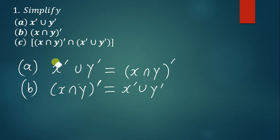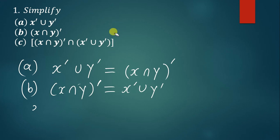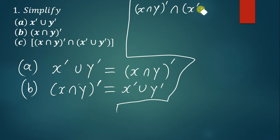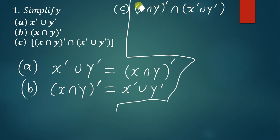Using these same two principles, let us see how we can simplify Part C. The question is: (x intersection y) complement, intersected with (x complement union y complement). The first thing we do is distribute the complement inside the brackets.